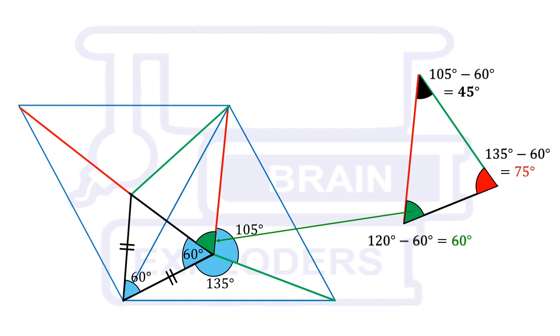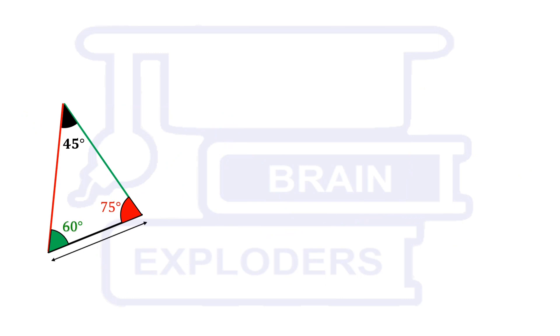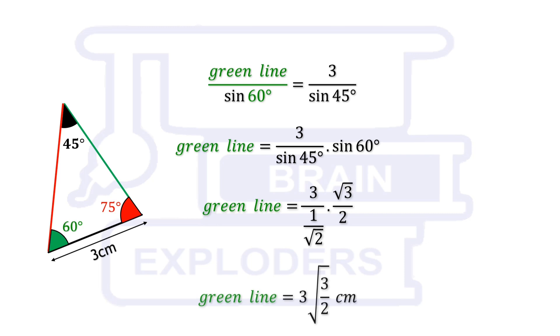Length of this black line segment is given equals to 3 cm. From here we can calculate the length of other sides of this triangle. Green line over sin 60 is equal to 3 over sin 45. On rearranging the terms and putting the values of sin 45 and 60, we find that green line segment is equal to 3 times root 3 by 2 cm.